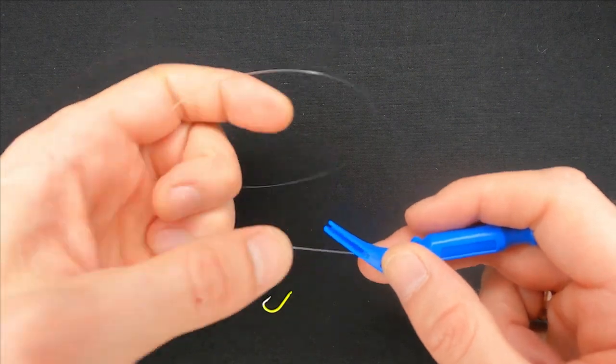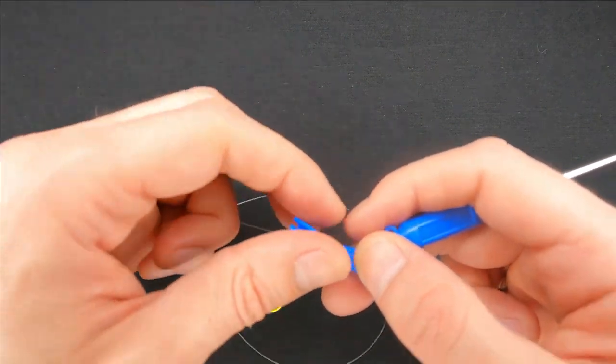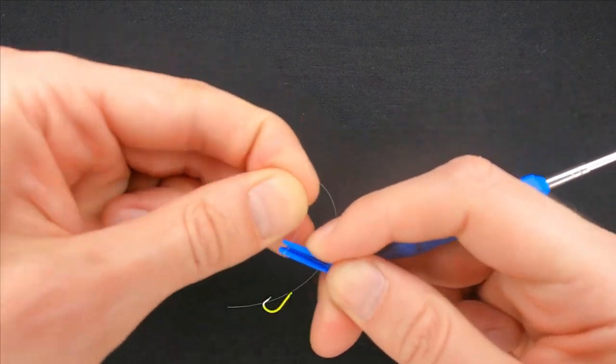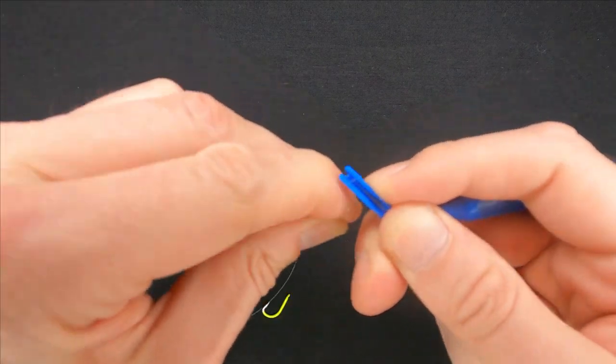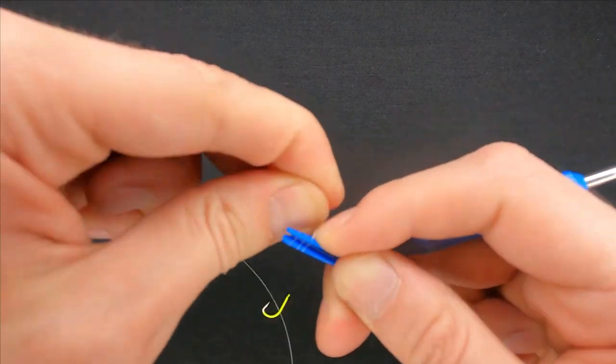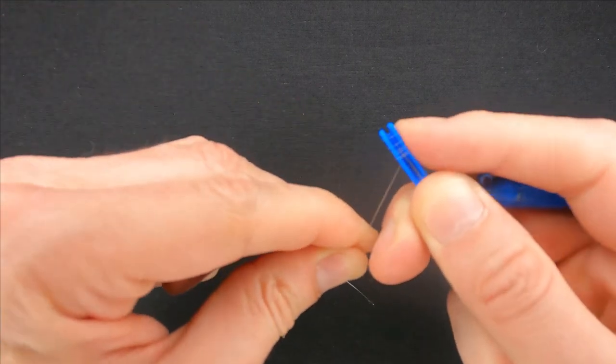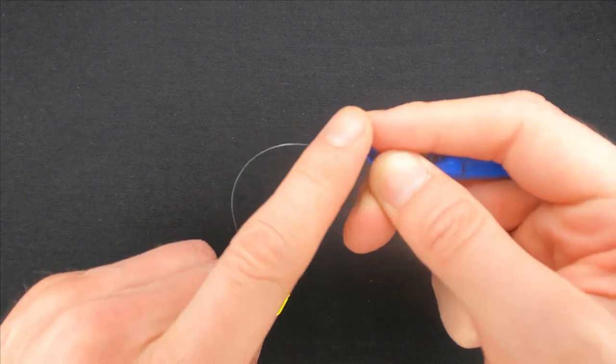To tie hooks you just take the line and wrap it around the knot tool about five to seven times. After you've done it hold the wraps with your index finger.